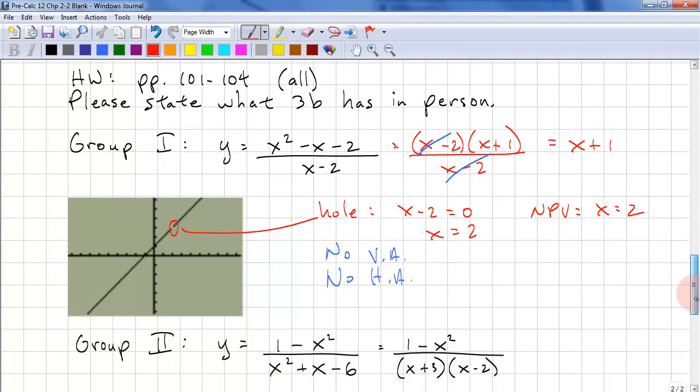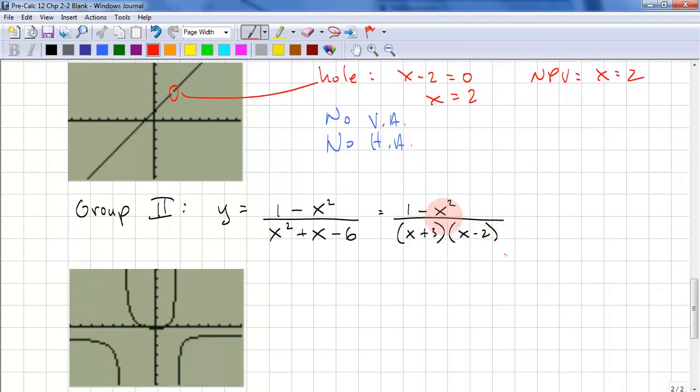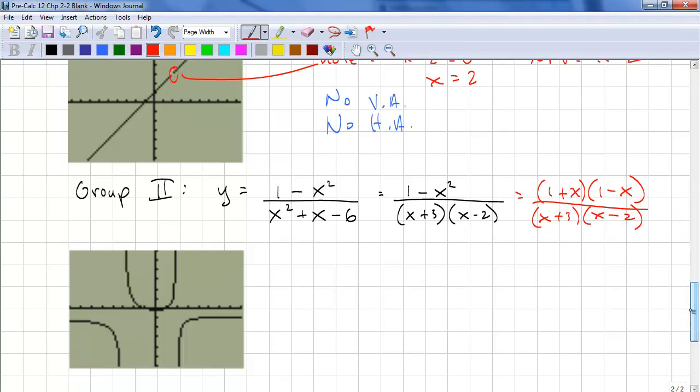Next example, called group 2. There are no common factors. This can also be factored at the top: 1 plus x, 1 minus x, x plus 3, x minus 2. There's no common factors.